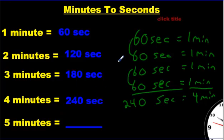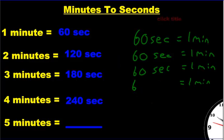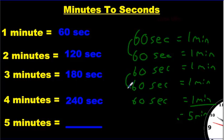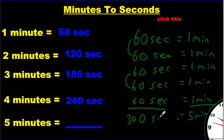Five minutes — we're going to add five 60s. I've got five minutes. Let's see: these two make 12, these two make 12, and 12 and 12 is 24, and then six more is 30. The zero ones are just zero. So 300 seconds is going to be five minutes.